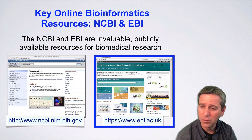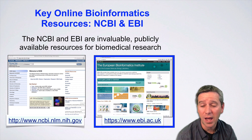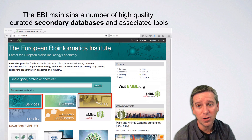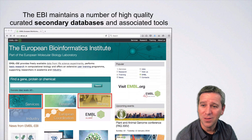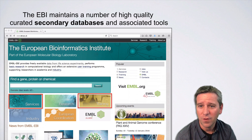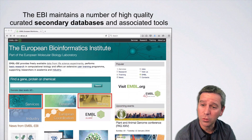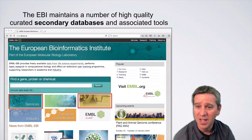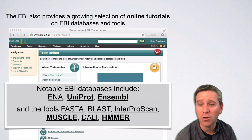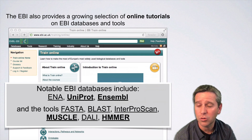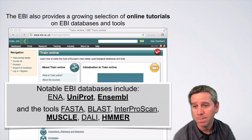Now over to our second major bioinformatics resource provider, the EBI. You'll notice its URL is based out of the United Kingdom — the .uk at the end. The EBI stands for the European Bioinformatics Institute, and it's based just outside Cambridge in the UK. It maintains a number of very high quality curated bioinformatics databases and a lot of associated tools. I'll also point out, in the second red box, that they have a lot of training material — like video resources — that walk you through using a number of the major EBI resources and bioinformatics tools, which can be particularly useful.